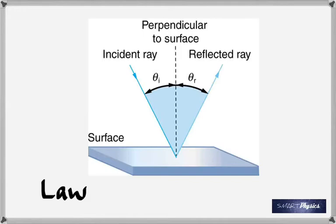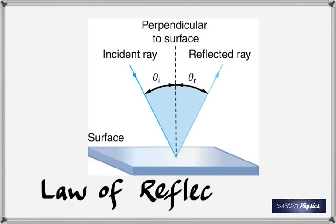With that diagram you should understand. Whatever the nature of the surface, these laws always hold good — whether it's a plane surface or a curved surface. Whenever light is reflected, these two laws are always true. So although I said 'law of reflection,' it is actually 'laws of reflection.' Theta I equals theta R, and all three are in the same plane.